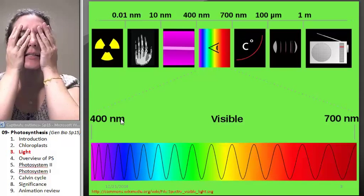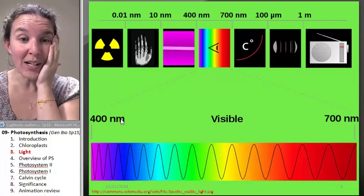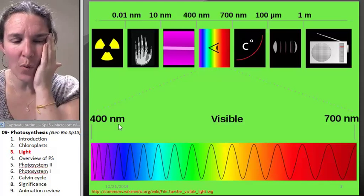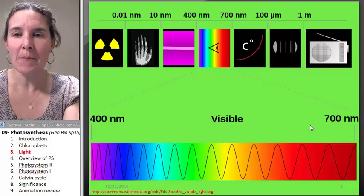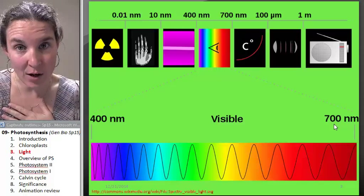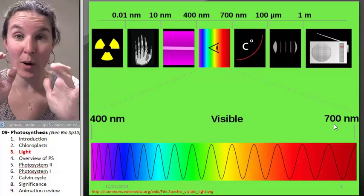The wavelength is tiny. It's 400 nanometers, a billionth of a meter to 700 nanometers. I mean, it's tiny, this little wavelength.